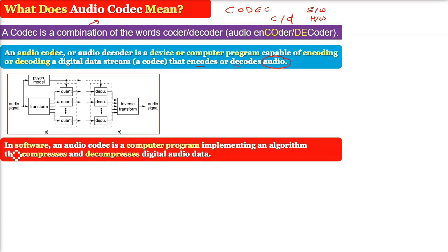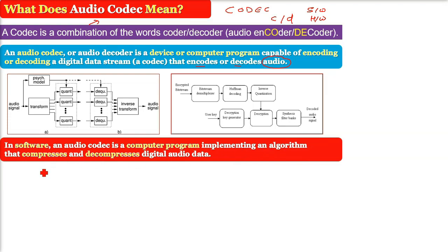In software, an audio codec is a computer program implementing an algorithm that compresses and decompresses digital audio data according to a given audio file or streaming media audio coding format.